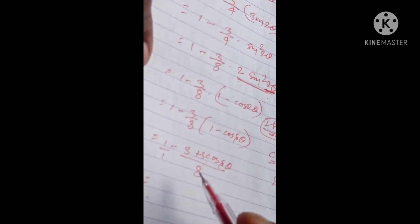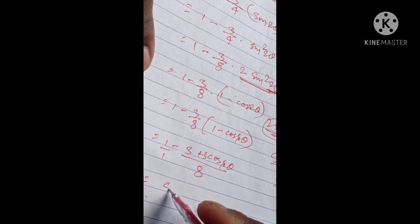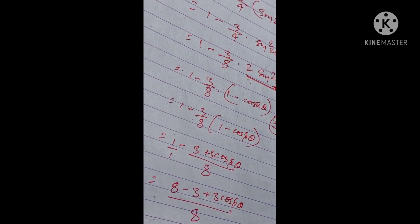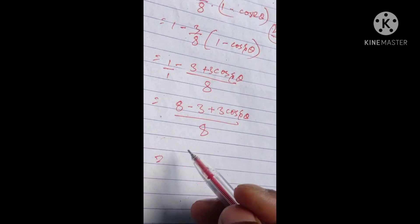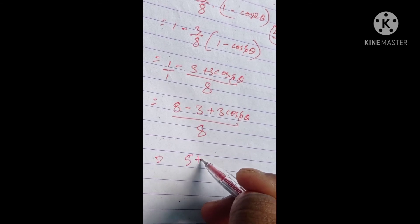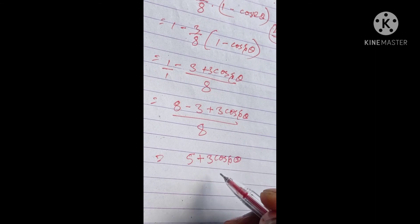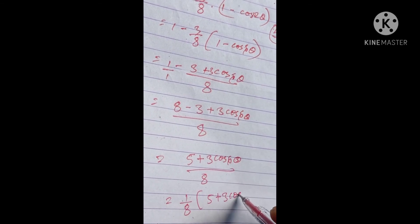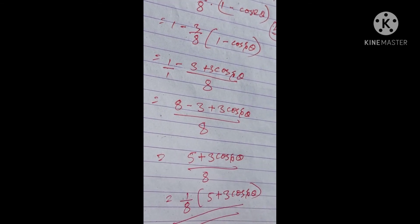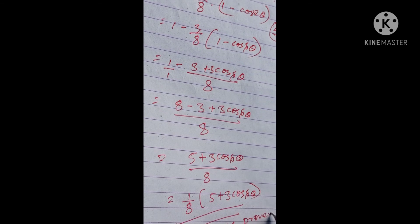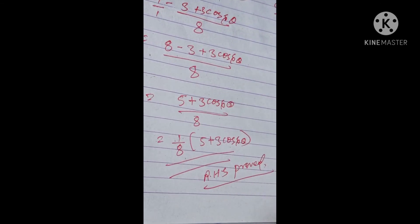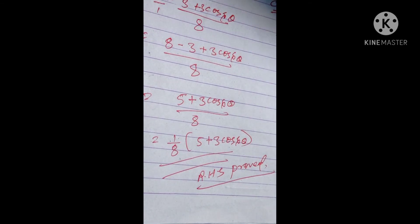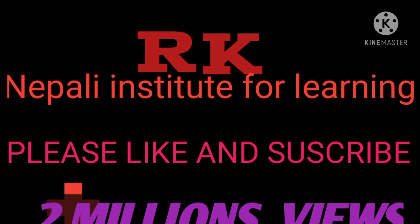Taking LCM of 8: in the numerator and denominator, we get (8 minus 3 plus 3cos4θ) divided by 8, which equals (5 + 3cos4θ)/8. Hence proved that sin⁶θ + cos⁶θ = (5 + 3cos4θ)/8.